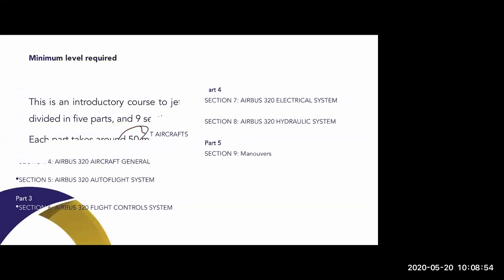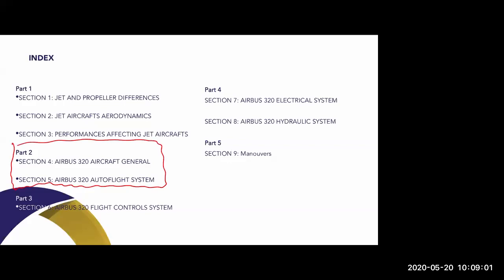Let's go into the index, the most important part. Today we are covering the aircraft general of the Airbus 320 and also the autoflight system. The autoflight system is very complex and very big, so today we're going to see just the basics of it - the theoretical knowledge on how it works. Remember that this orientation course is not only composed of ground training; it also has four full flight simulator sessions where you learn to manage the inertia of a jet aircraft and automation.